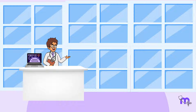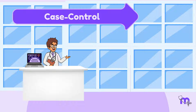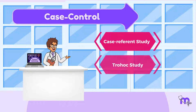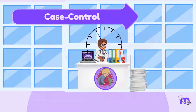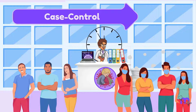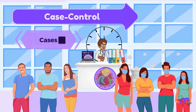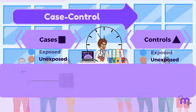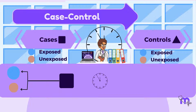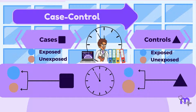Let's first talk about Case Control Studies. This type of study is also known as a Case Referent Study, a Trohoc Study, or a Retrospective Study. It is a type of observational study in which I take two existing groups — namely cases and controls — and compare them. Note that the disease here has already occurred. I collect the data and go back in time to investigate the patterns of exposure.